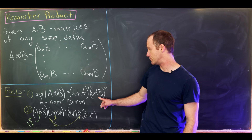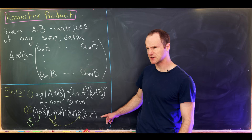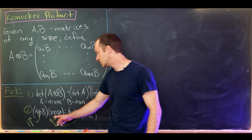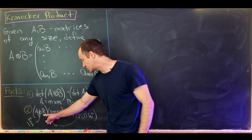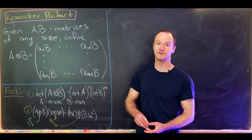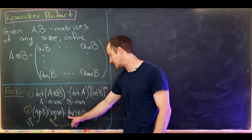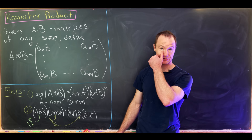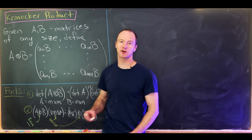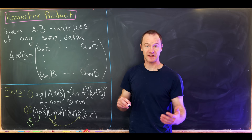There's also a fact we won't prove but which gives a lot of motivation for the definition of the Kronecker product: if we take A⊗B and do matrix-vector multiplication with the tensor product of two vectors v and w in a tensor product vector space, that equals the tensor product of (Av) and (Bw). What this says is that the Kronecker product is the matrix version of the tensor product of two linear transformations.